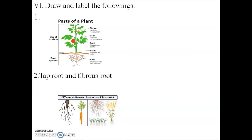Next: draw and label the following. First picture: parts of a plant. The brown-colored part is called the root system and the green-colored part is called the shoot system. The parts include flower, leaf, fruit, stem, and root - these five points are very important.